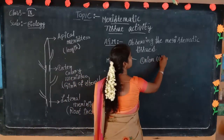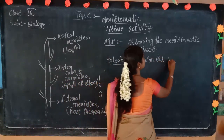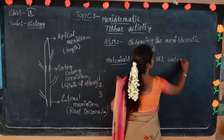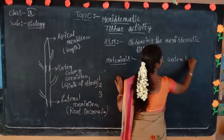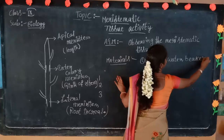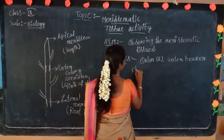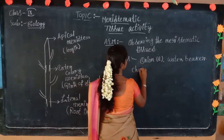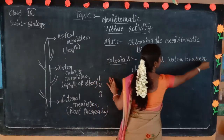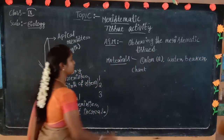Two onions. And next: water, and beakers, and a chart. These are the materials I am going to take.